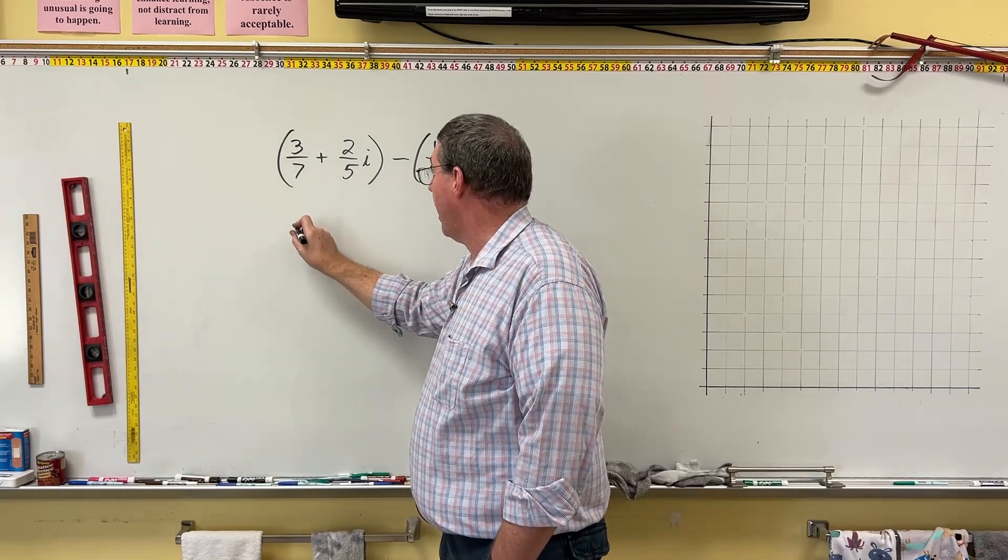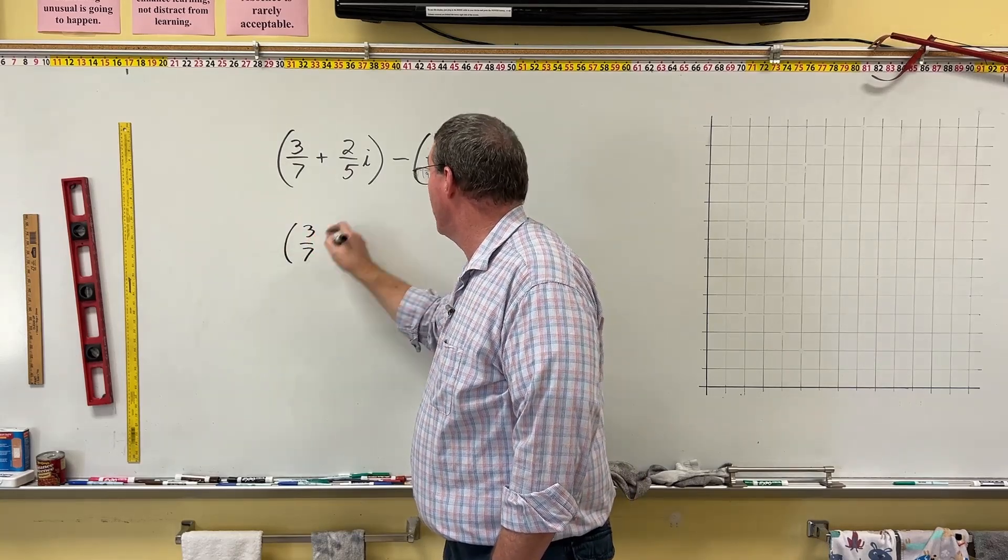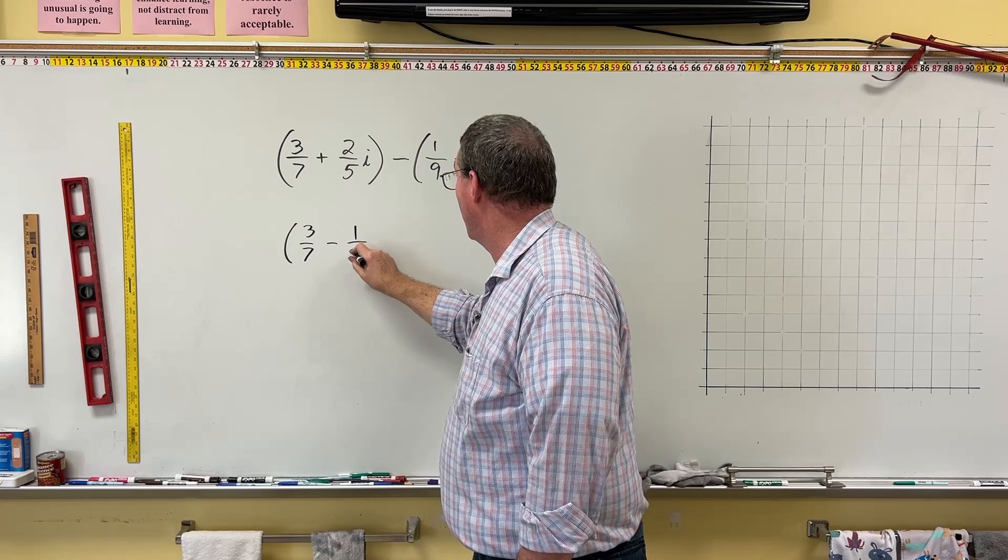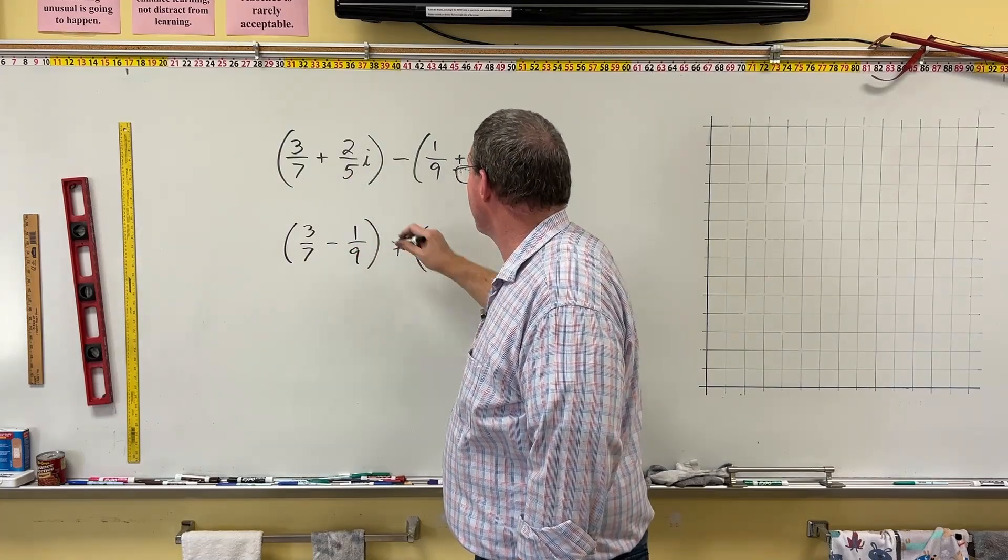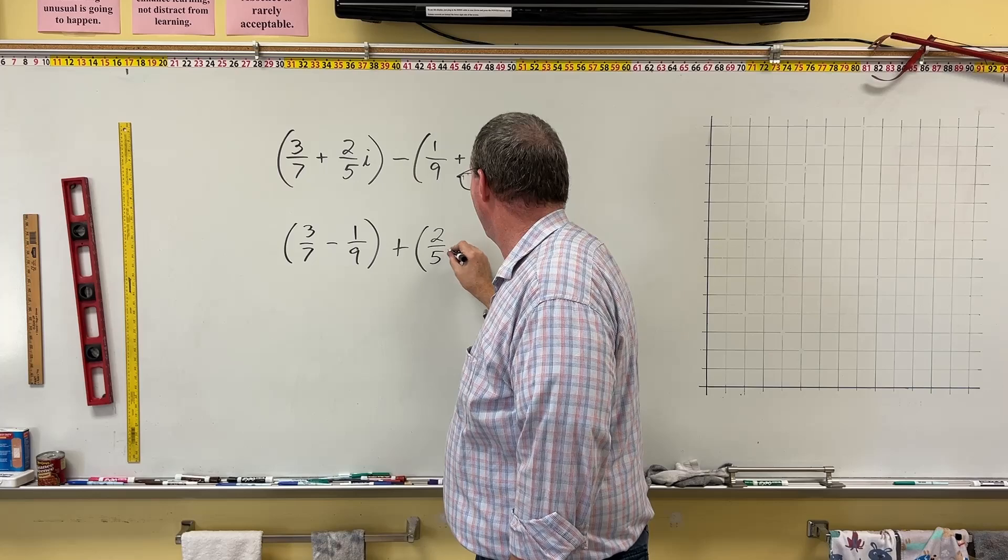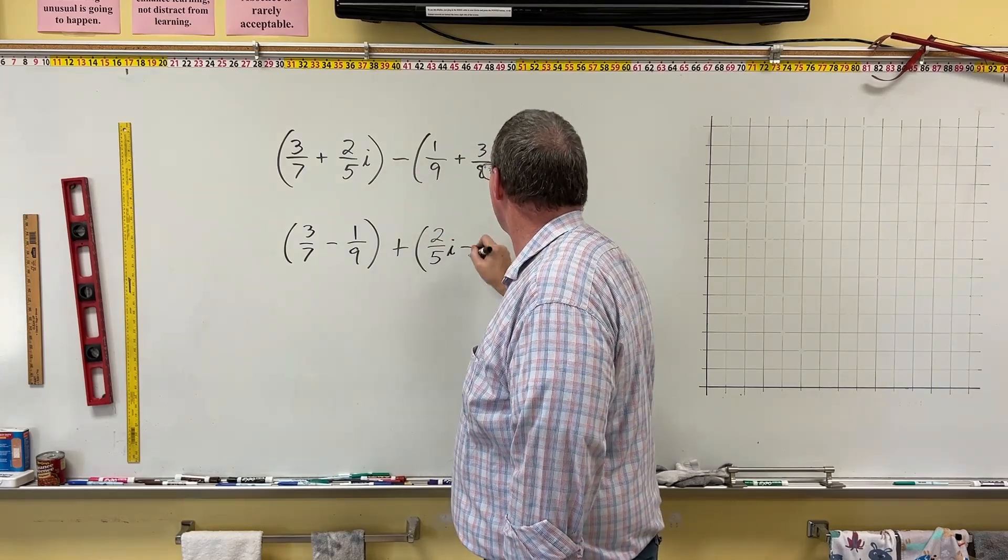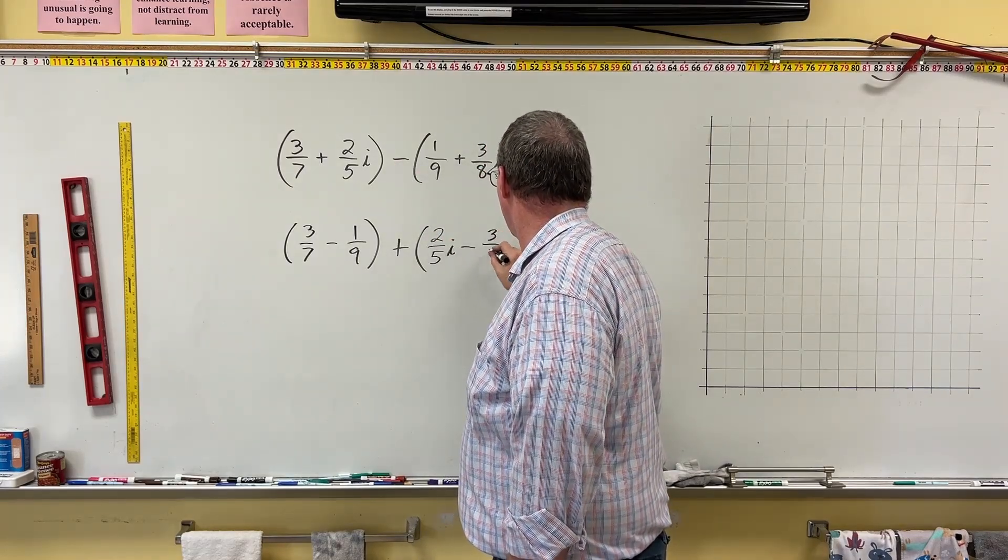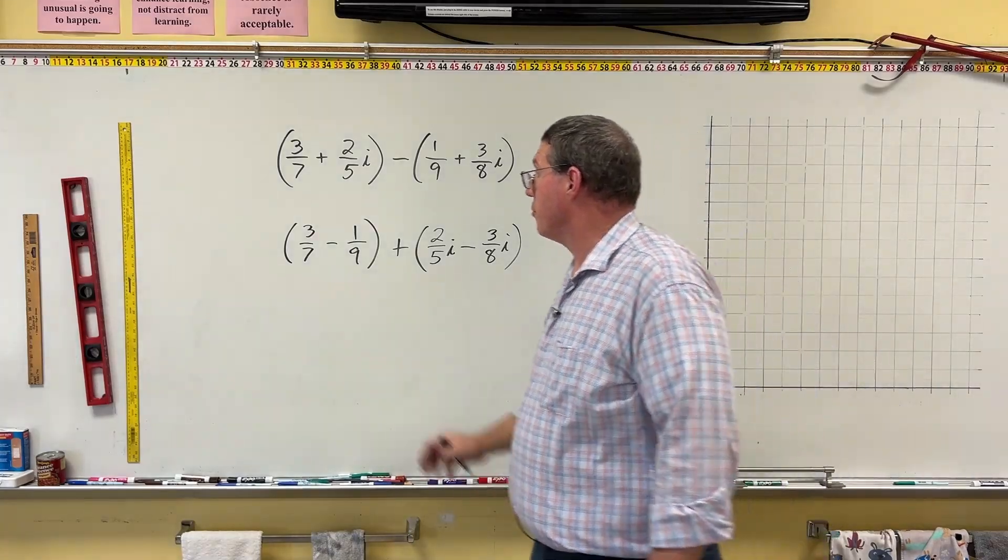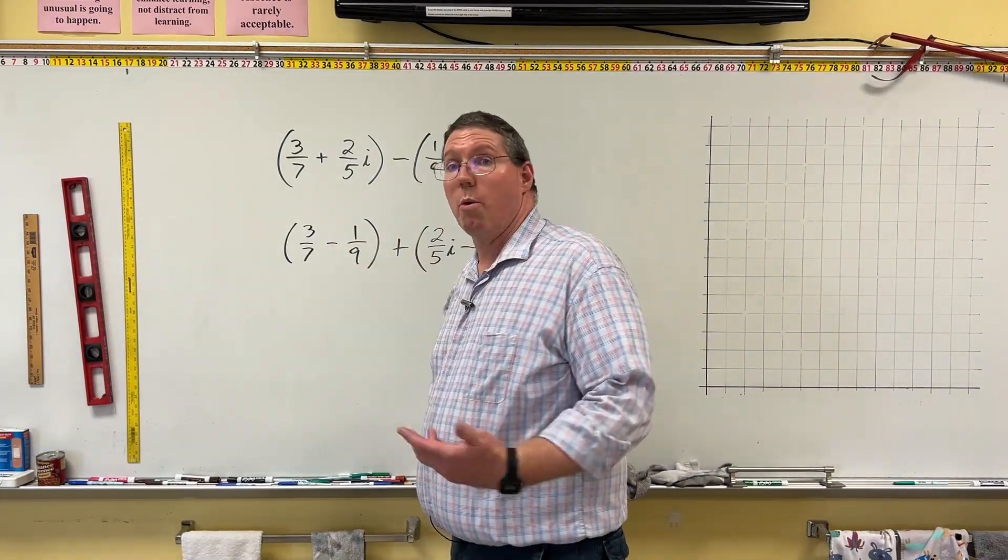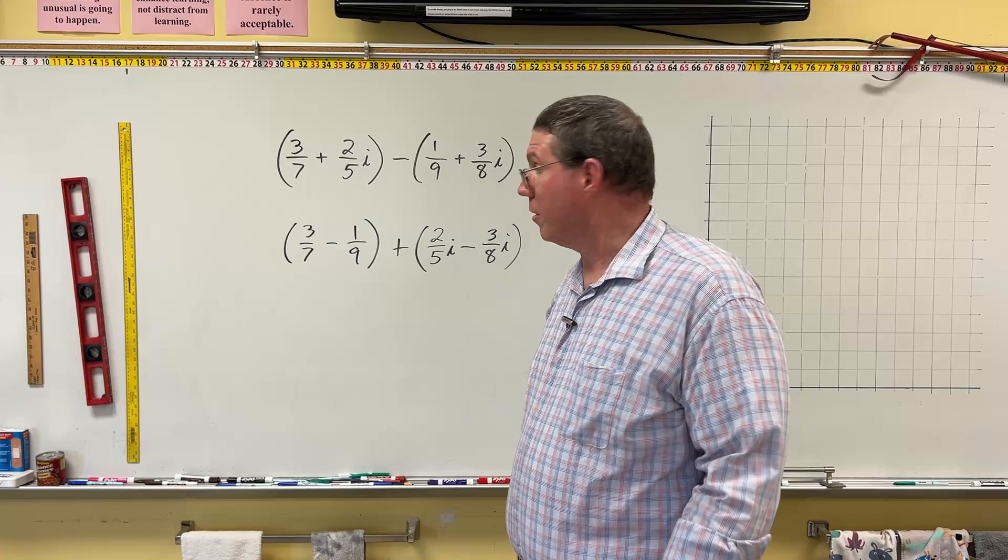So here we're going to have 3 sevenths minus 1 ninth, plus 2 fifths i minus 3 eighths i. Okay, so in order to do 3 sevenths minus 1 ninth, we're going to need a common denominator, right?